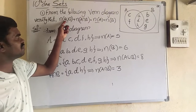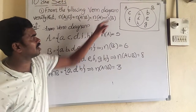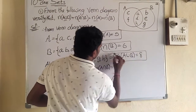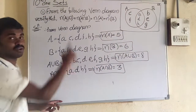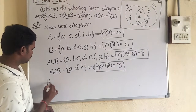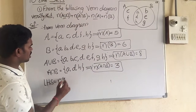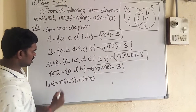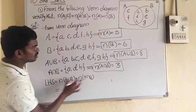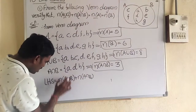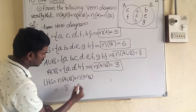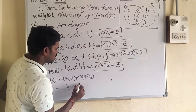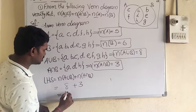We got all values: N of A union B, N of A intersection B, N of A, and N of B. Now I am going to prove the given question. Taking LHS: N of A union B plus N of A intersection B equals 8 plus 3 equals 11.